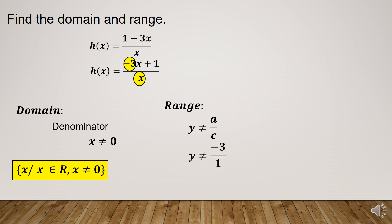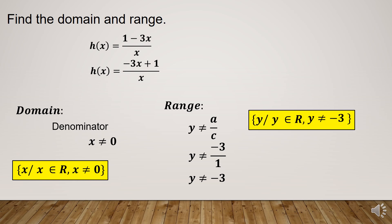Therefore, y is not equal to negative 3 over 1, so y is not equal to negative 3. The range is the set of y such that y is an element of the real numbers, but y must not be equal to negative 3.